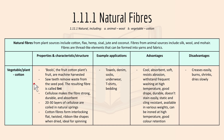Next is cotton — a vegetable or plant fiber. The bolls, which are the fruit of cotton plants, are machine harvested and saw teeth remove waste from the seed pod. The resulting fiber is called lint. Cellulose makes the fiber strong, durable, and absorbent. Twenty to thirty meters of cellulose are coiled in natural springs, and cotton fibers form interlocking flat twisted ribbon-like shapes when dried, making it ideal for spinning.